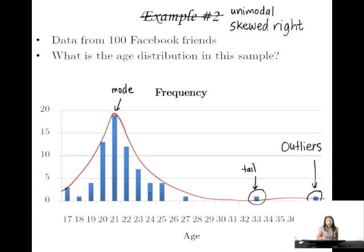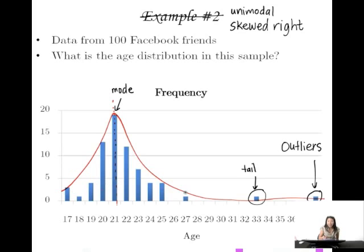Note also that because this is skewed right, if we drew a line of symmetry from the mode and imagined folding this distribution on itself, we wouldn't have two sides that match up. So we call this asymmetric as well. So it's unimodal, skewed right, and asymmetric.